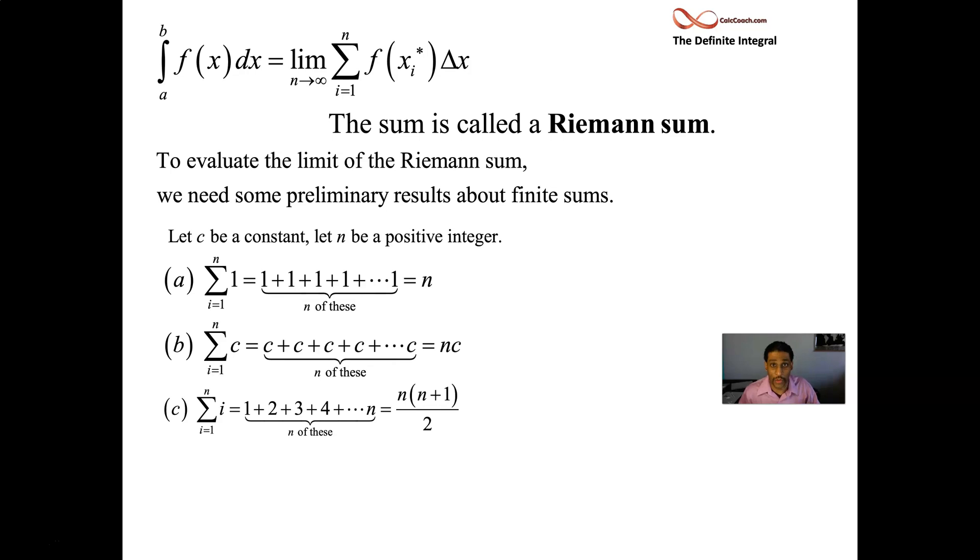And the way you can get that so quickly is with the formula. The formula is n times n plus one divided by two. And we'll be using these formulas if we see sum i equals one to n of i. So it's adding up one to n and that's the formula for that: n times n plus one all divided by two.